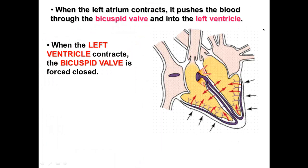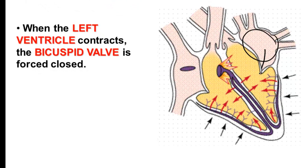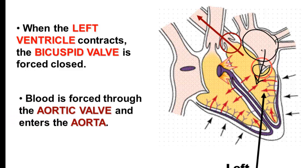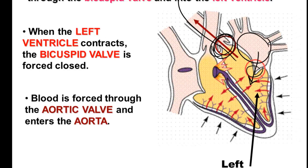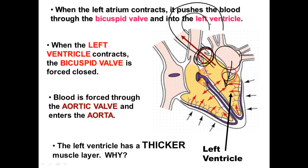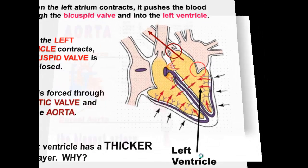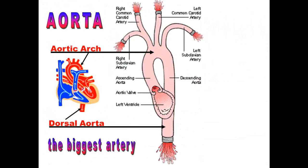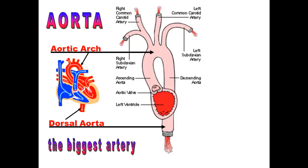When the left atrium contracts, it pushes blood through the bicuspid valve and into the left ventricle. When the left ventricle contracts, it closes that valve and opens the next valve — the aortic valve — which leads into the aorta, or into the aortic arch that arches around the top of the heart. The left ventricle is much thicker than the right ventricle — you'll notice this when you're dissecting your heart, because it's much tougher and harder to press. That's because it has to pump blood to the whole body, not just the lungs, so it has a bigger job to do.